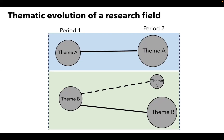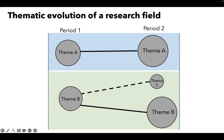Another diagram that CIMAT can show you is the thematic evolution of a research field. You can see the evolution of a theme or thematic network of keywords from one time period to the next. Theme A, for example, has a smaller node that then becomes a larger node in period two. The size of the node can be a measure of the number of publications with that keyword. You can also use other indexes like the G index. The links between themes are based on similarity measures — we'll be using the inclusion index as a similarity measure between the two thematic networks.